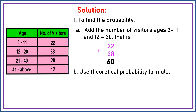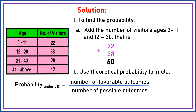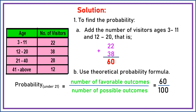For step B, use the theoretical probability formula. Probability of under 21 is equal to number of favorable outcomes divided by number of possible outcomes. The number of favorable outcomes is 60. The number of possible outcomes — adding all visitors: 22 plus 38 is 60, plus 28 is 88, plus 12 is 100. So the number of possible outcomes is 100. Therefore, 60/100 equals 0.6 in decimal.